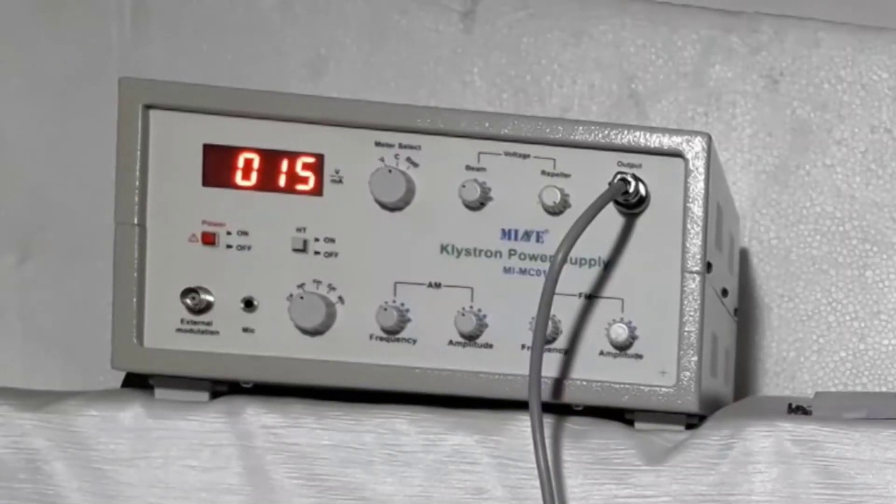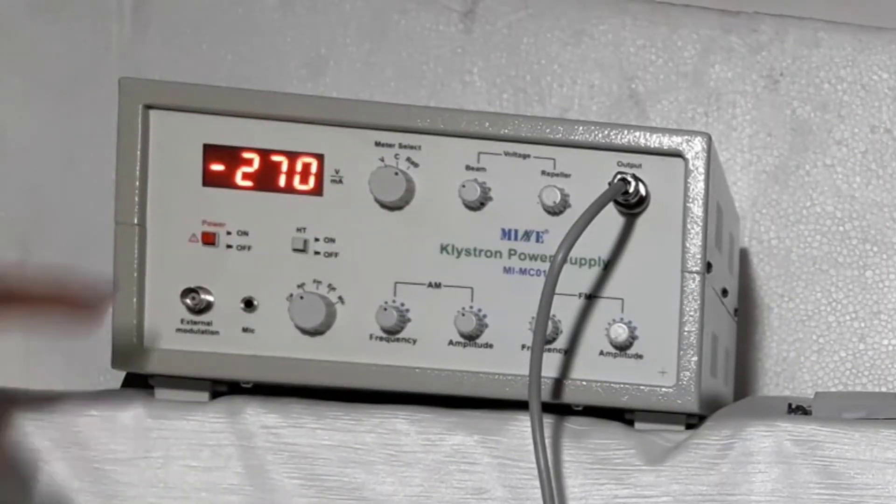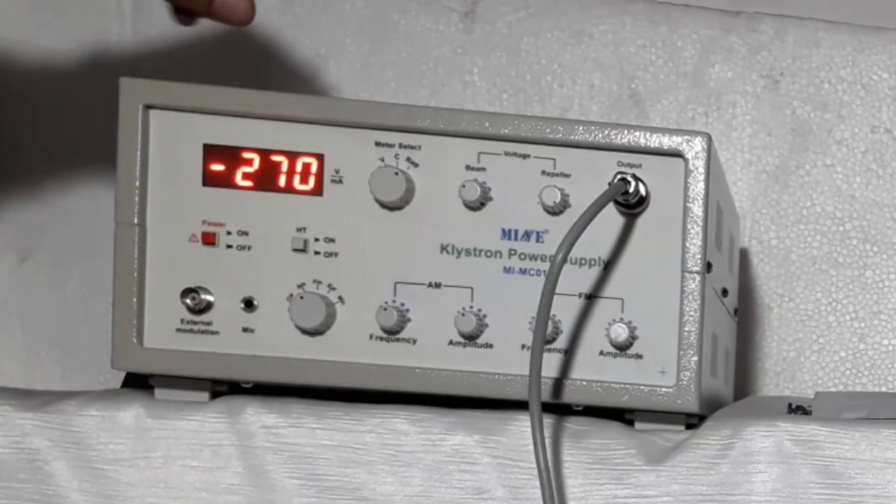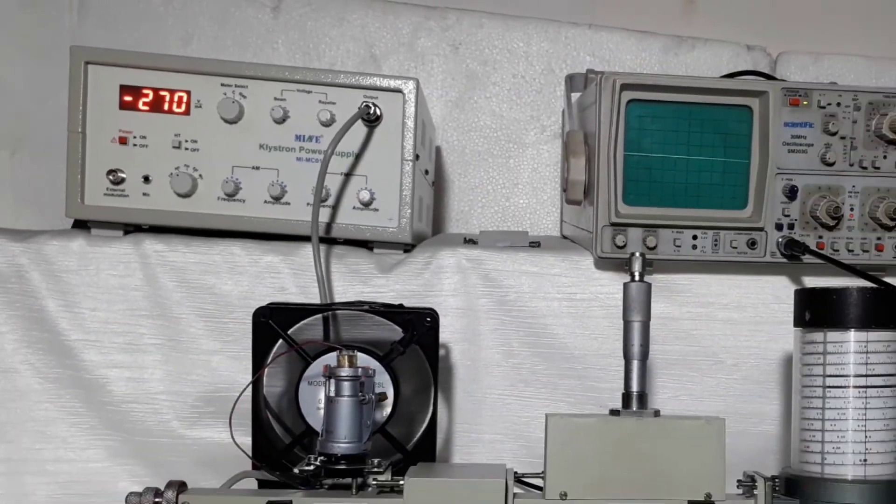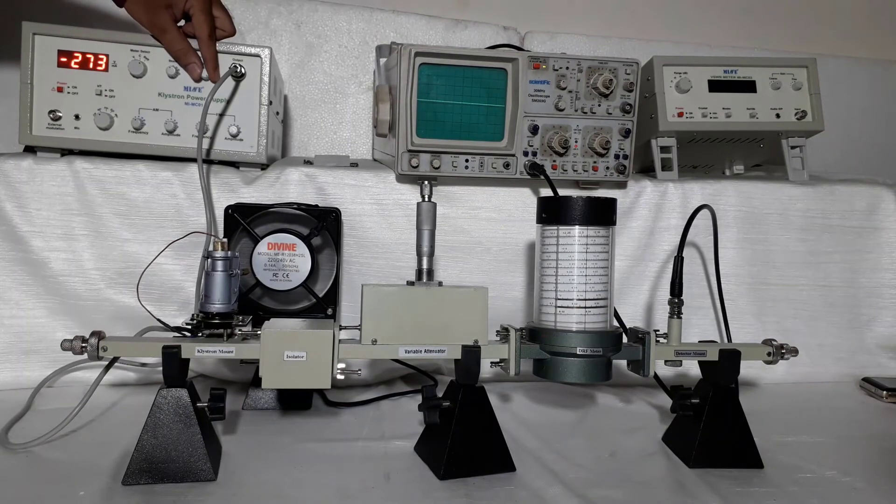Now change meter select knob at repeller voltage and see repeller volt. It would approximately minus 270 volts. Now by changing repeller voltage clockwise slowly and try to get a square waveform on CRO.